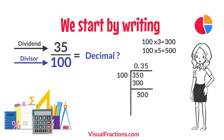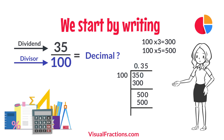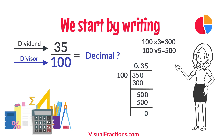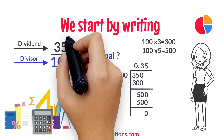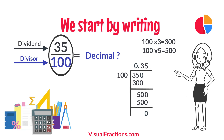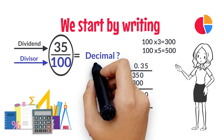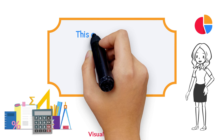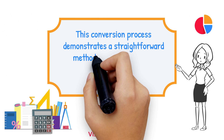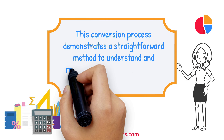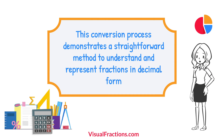Multiplying 5 by 100 gives us 500. When we subtract 500 from 500, we get a remainder of 0. So there we have it — the fraction 35 one-hundredths converted to a decimal is 0.35. This conversion process demonstrates a straightforward method to understand and represent fractions in decimal form.